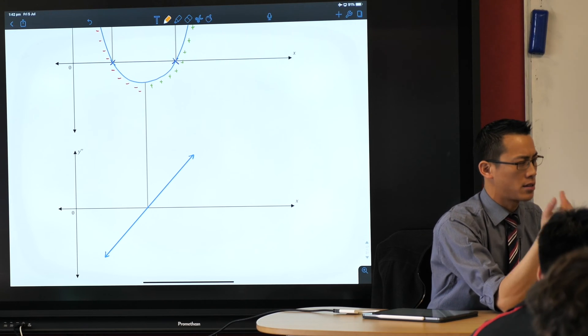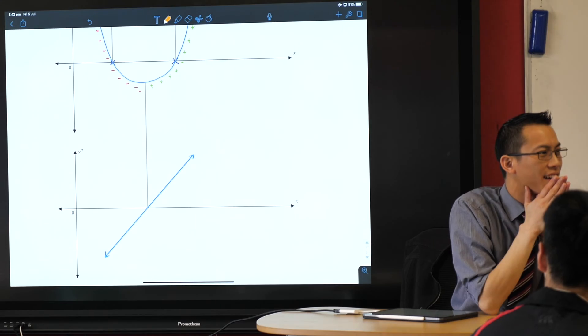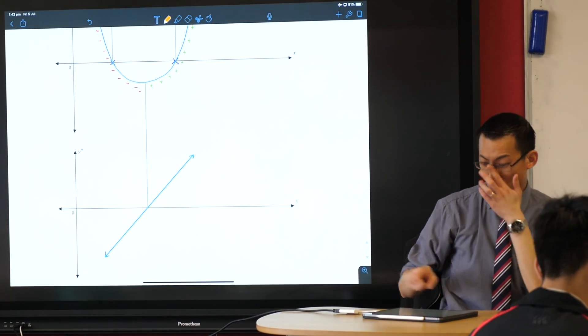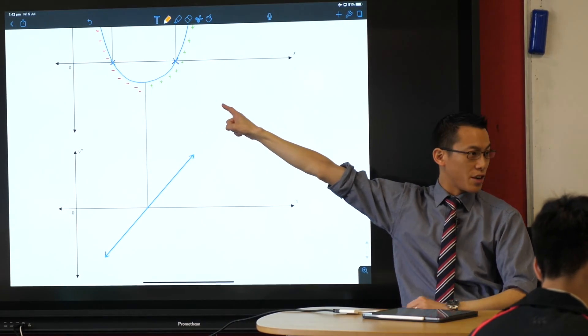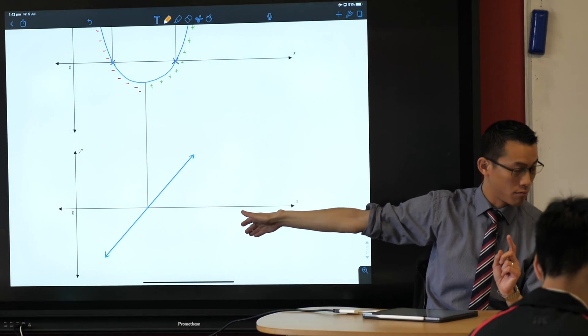Why should that make sense with the intuition we had before? There's only one stationary point. Very good, so when you look and see there's only one stationary point, just one, you should expect only a single place where you've got a gradient of zero.